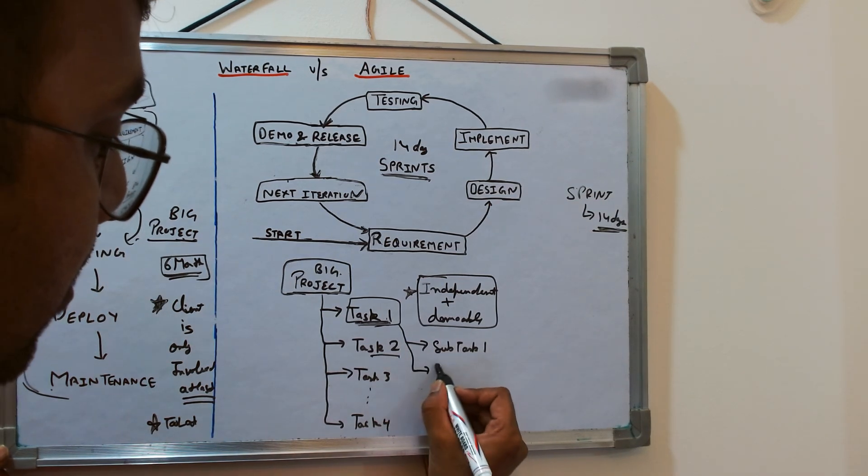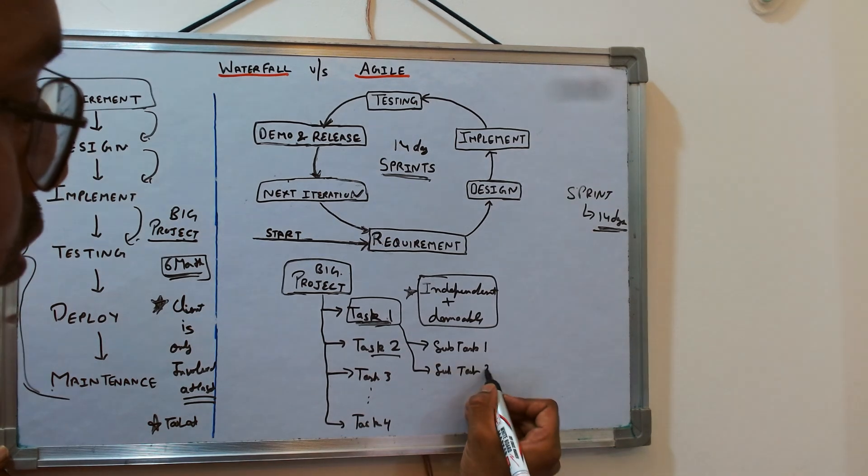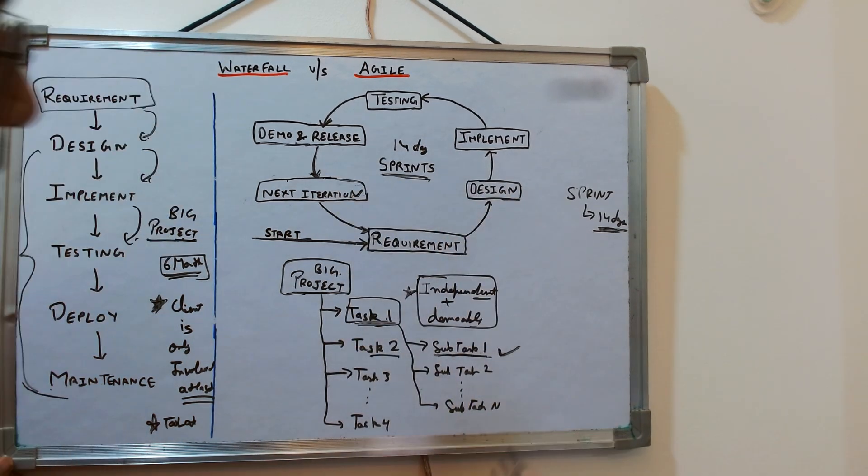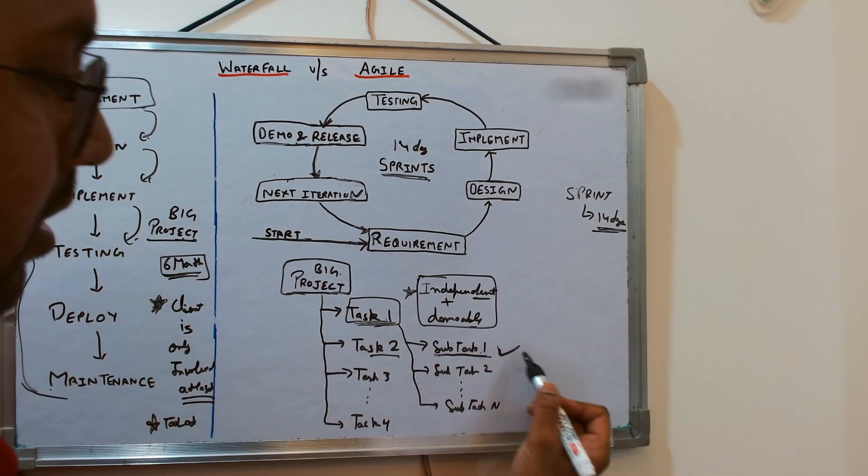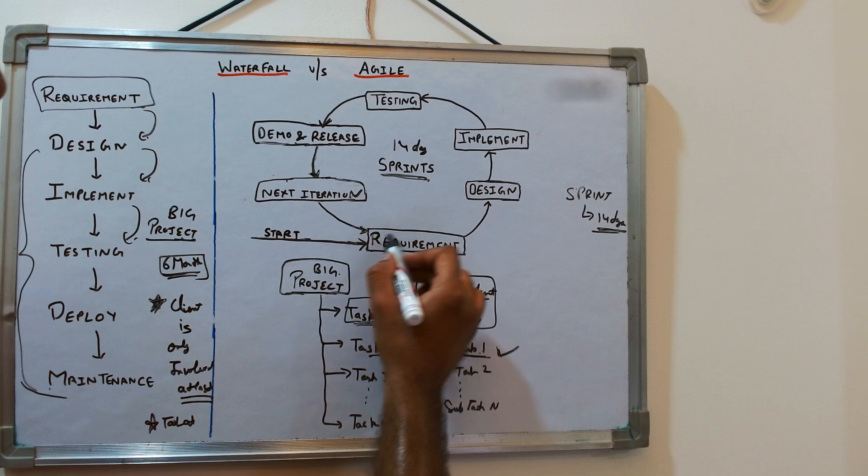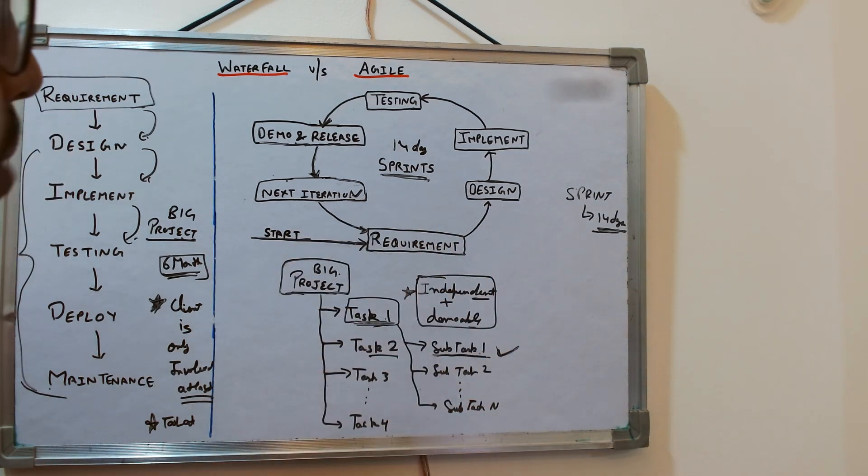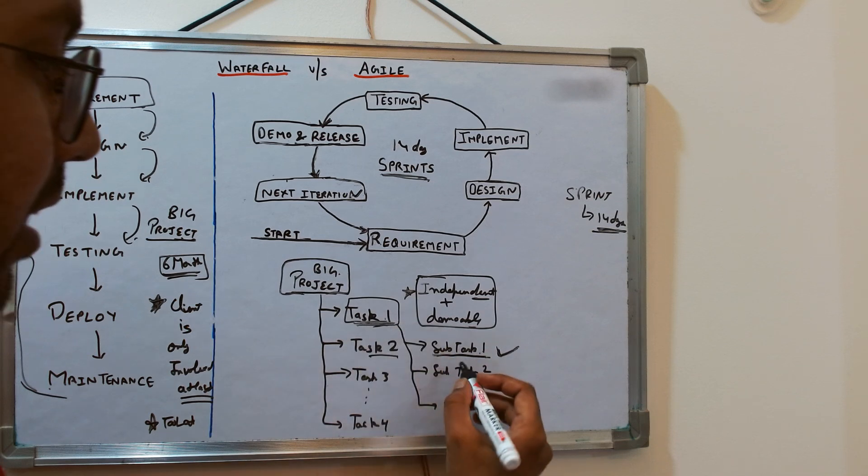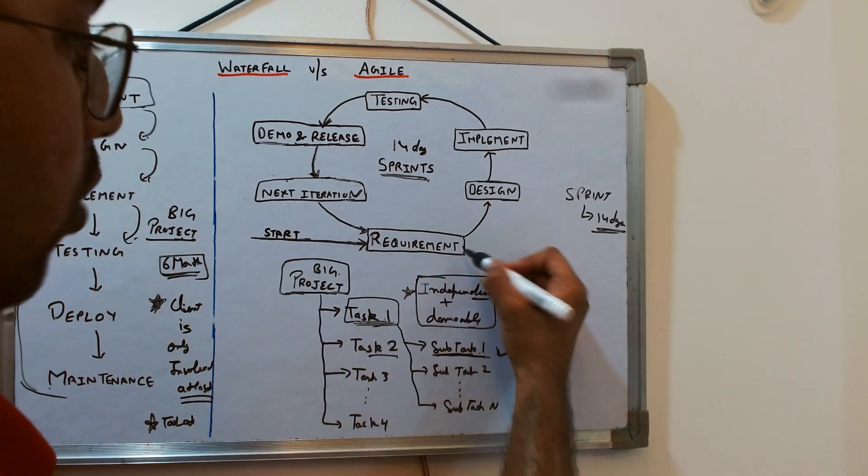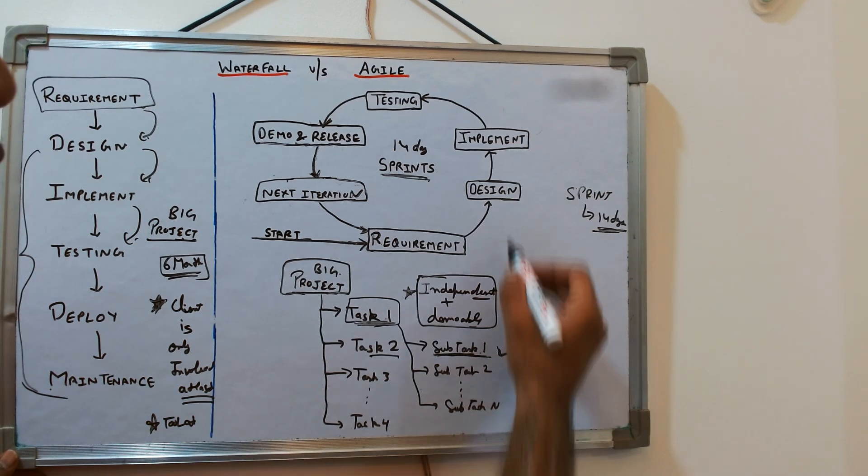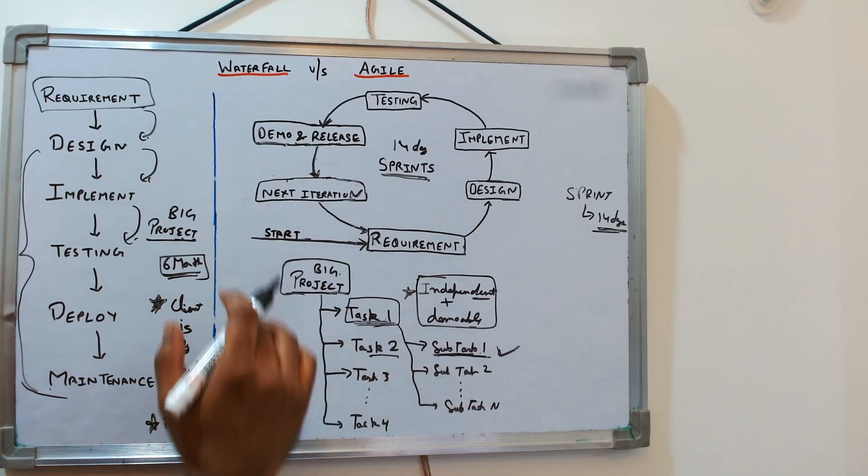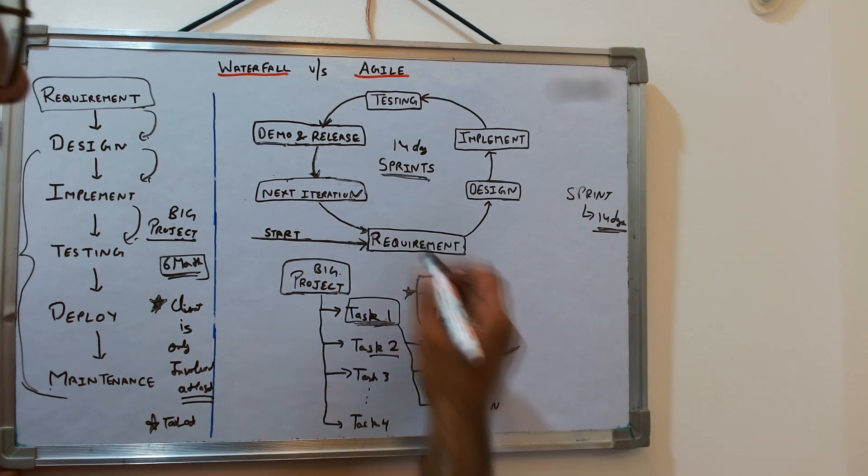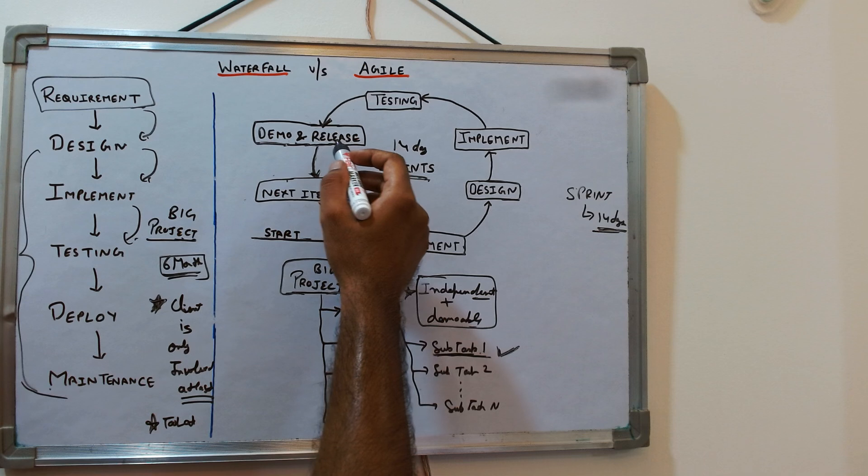If this subtask can be completed in one sprint, you pick this task. Once you pick it, you do proper requirement for it. You might set up a meeting with your product owner or client to understand what exactly has to be done. You do requirement gathering, design for subtask one, implement it, test it, and then do a demo within your team, outside the team, or with your clients. Once they provide sign-off, either you improve it or, if they're good with it, you release it.